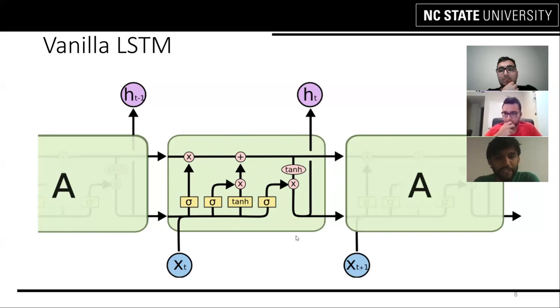This section is the output gate which basically filters out the required components within the cell state that needs to be outputted at each step like this hidden state ht. Let's move forward.